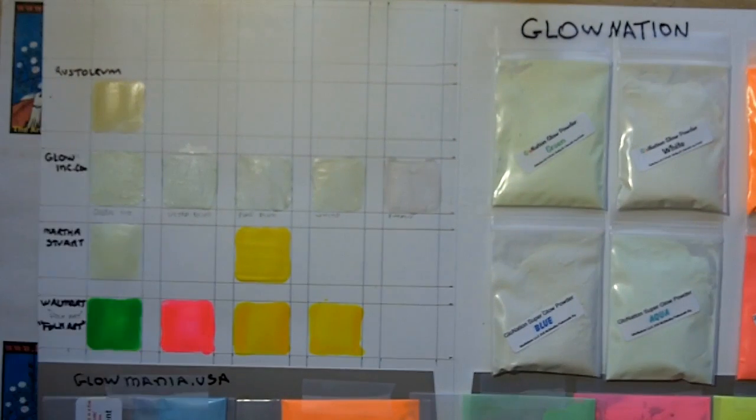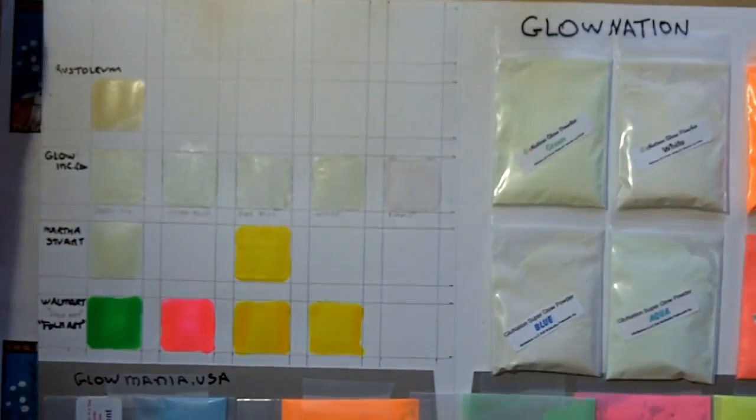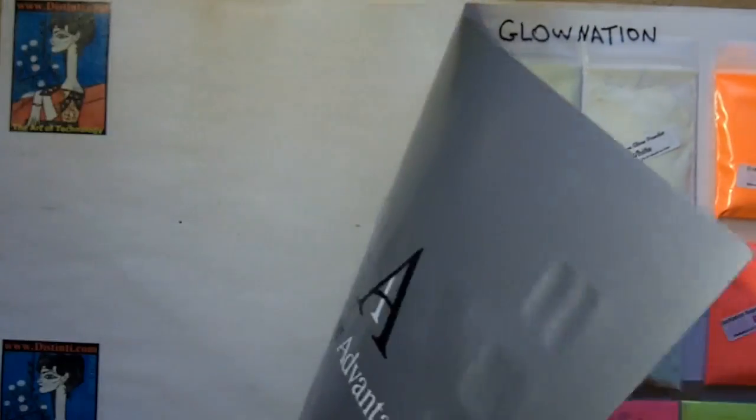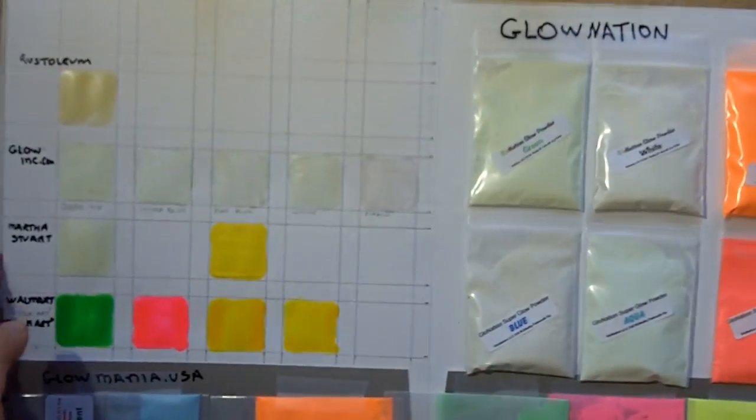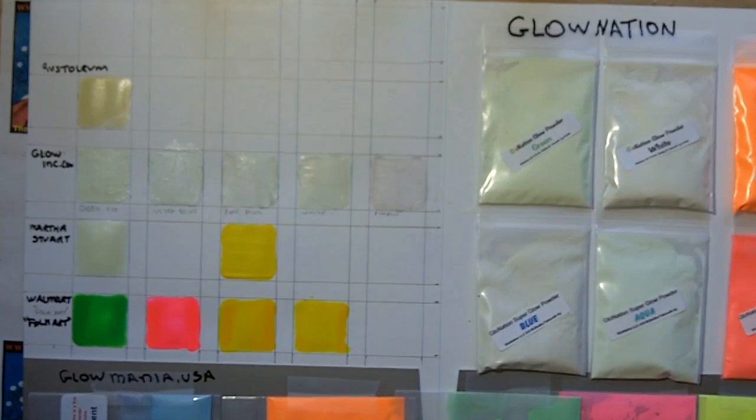Up here is a Rust-Oleum product from Home Depot. You have to put this stuff on thick. One problem with putting it on thick is it warps the paper because it's water-based. One of the things I'm finding out is these other pigments say do not use water because water will ruin them. I think with some of these better pigments, we want to use something that's not water-based, like a clear epoxy or something.